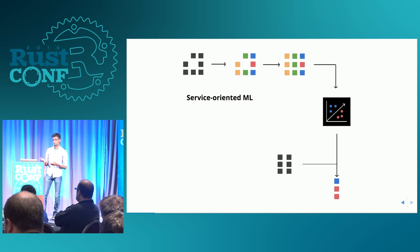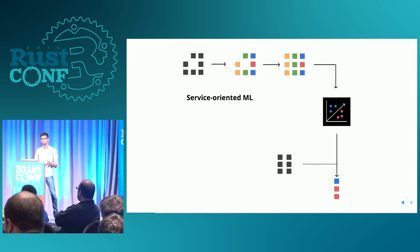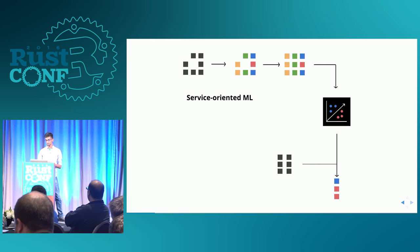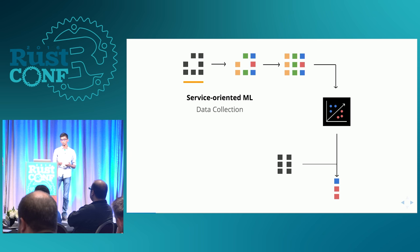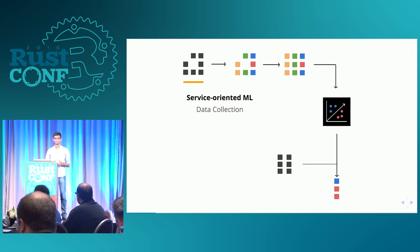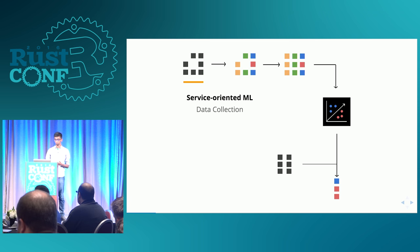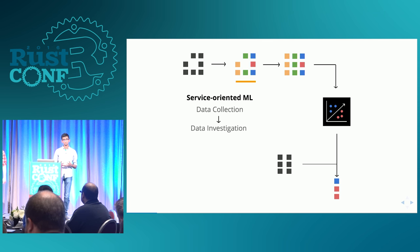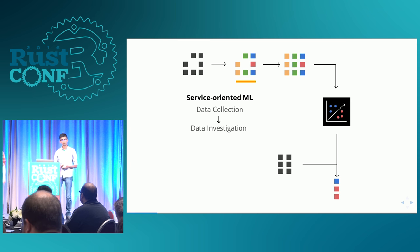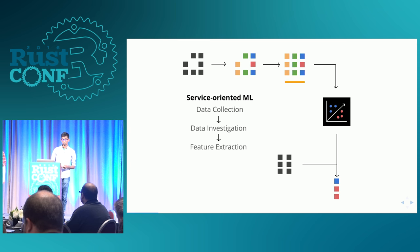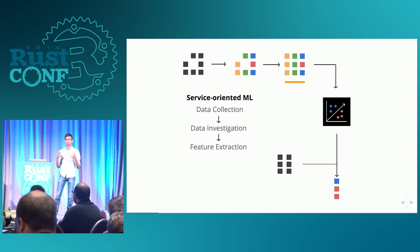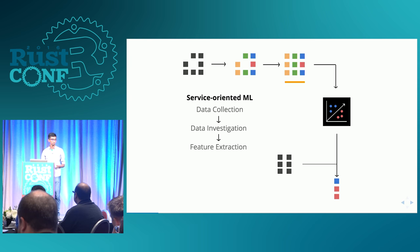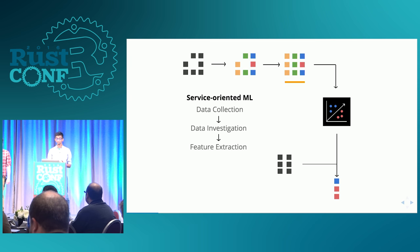This is a basic diagram of what service-oriented machine learning looks like. We first have a data collection phase where we're collecting data from an internal repository or external resource. This data represents some problem we're trying to solve — it could be really messy, have missing data points, or come from unstable resources. The next stage is data investigation, where we identify trends and understand our data. We use these trends to extract features, normalize the data into a machine learning friendly format, and fill in missing values.